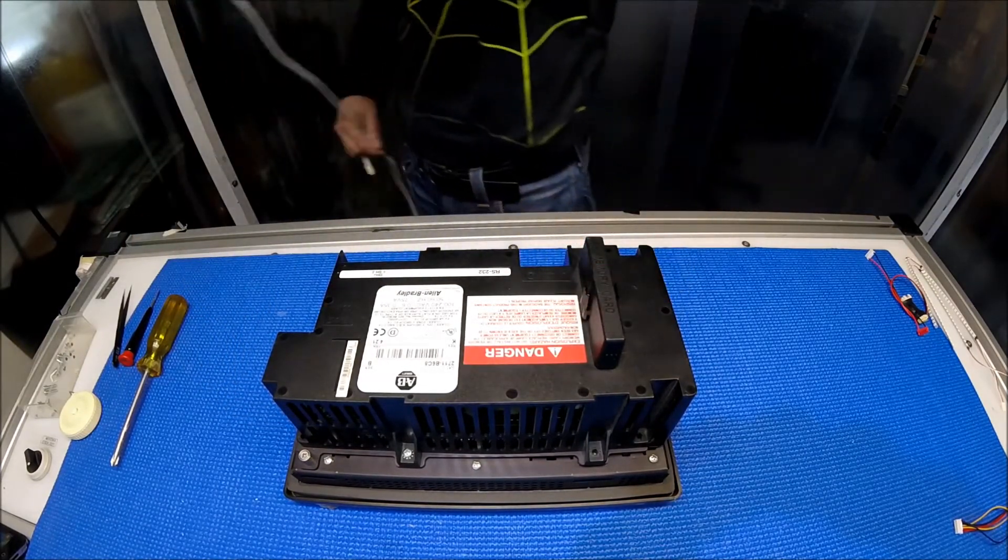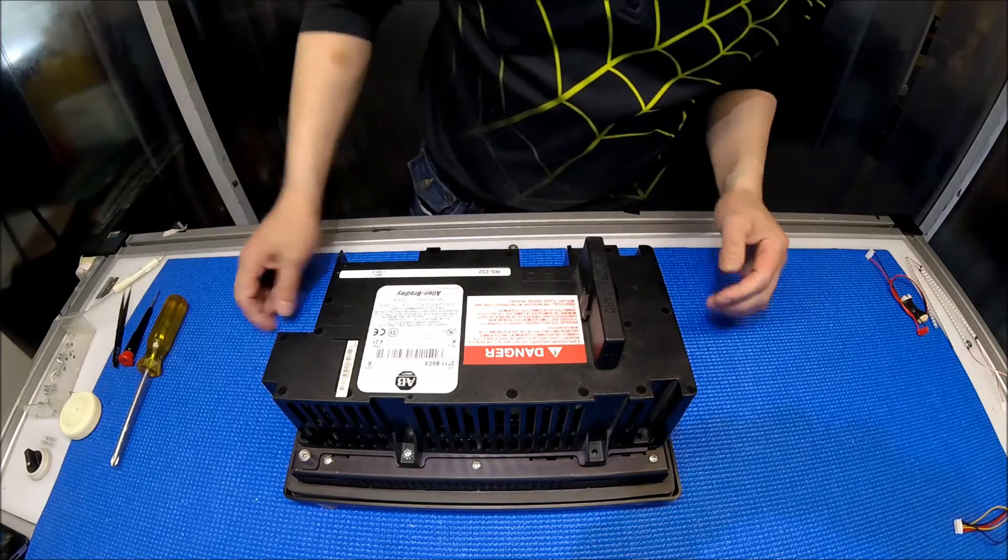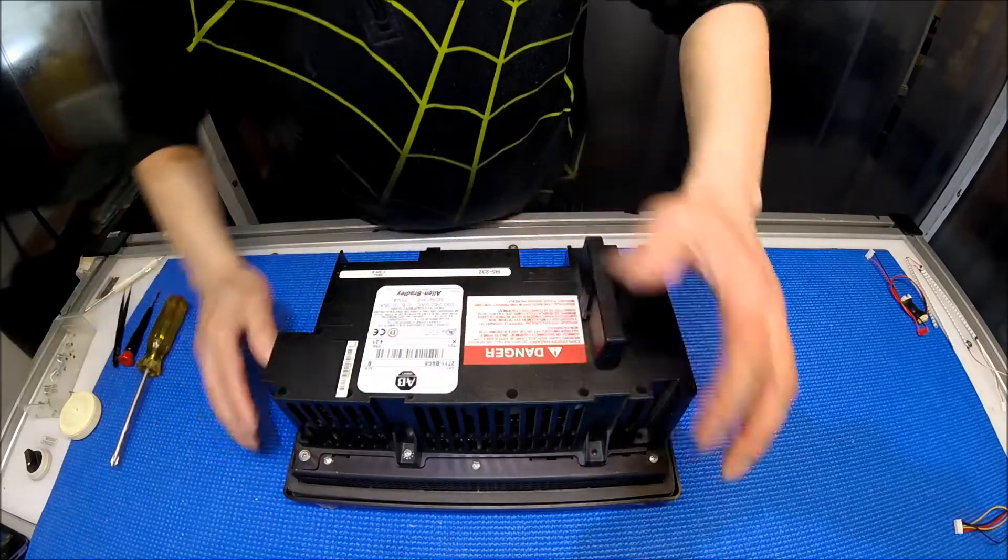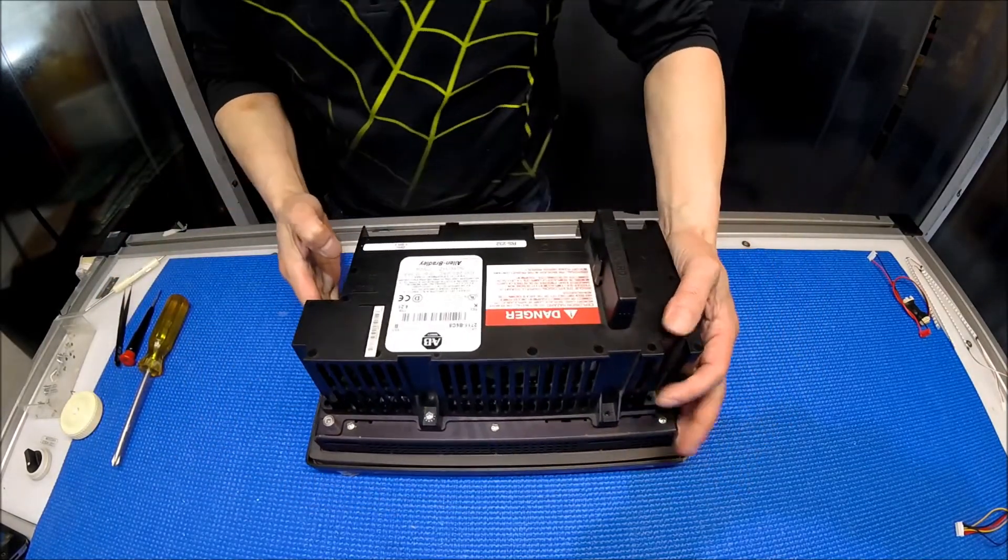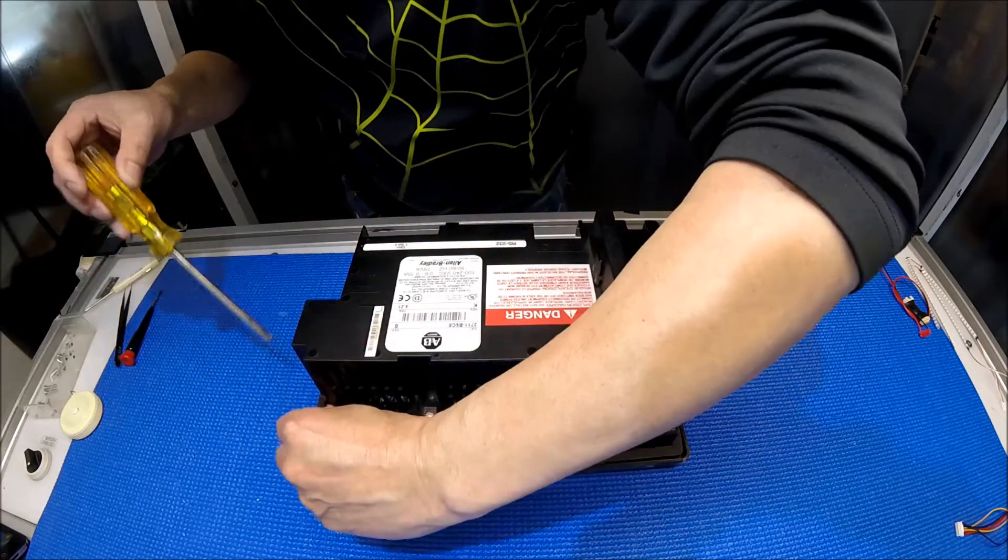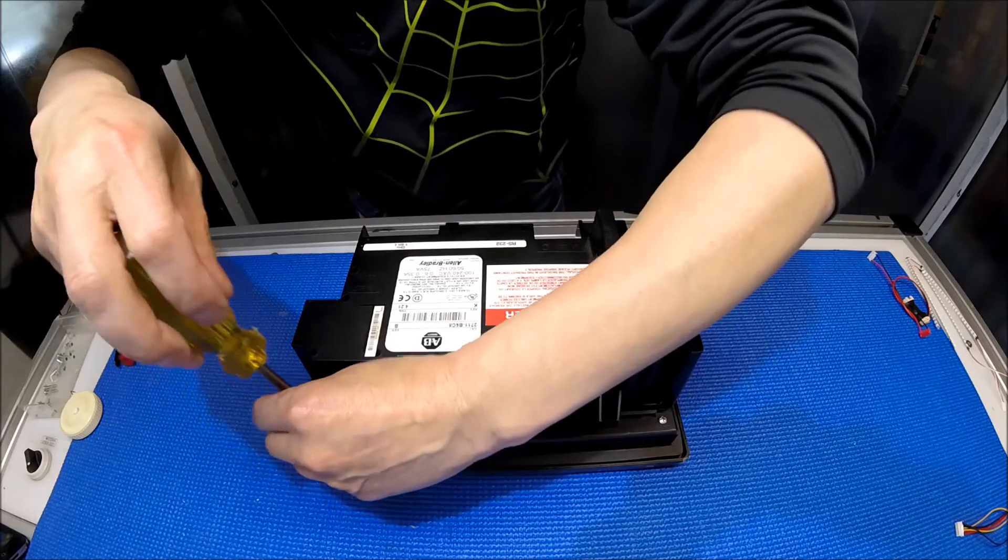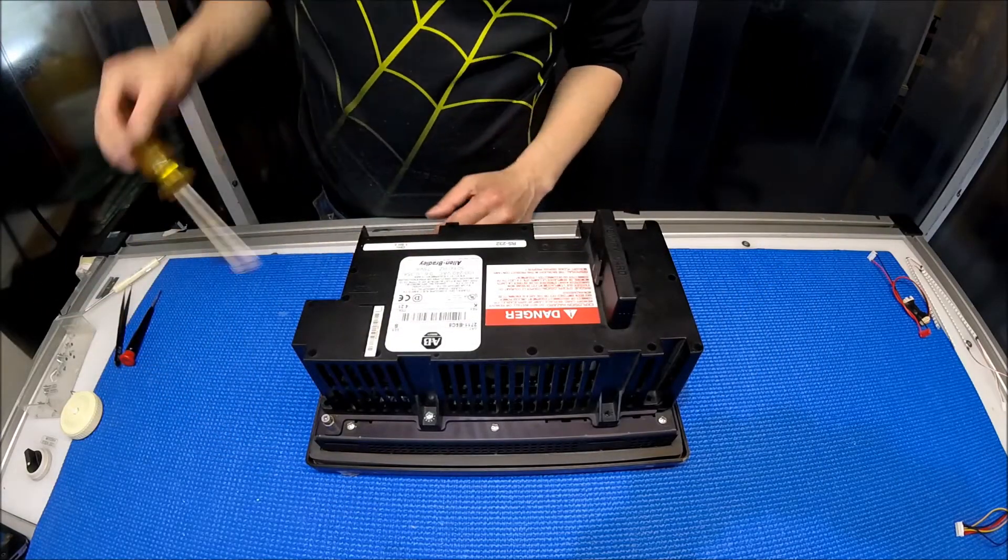We're going to take a look here. In order to access the CCFL, it's pretty easy. There's two screws, one here and one here. I'm going to take them out, just loosen them up.